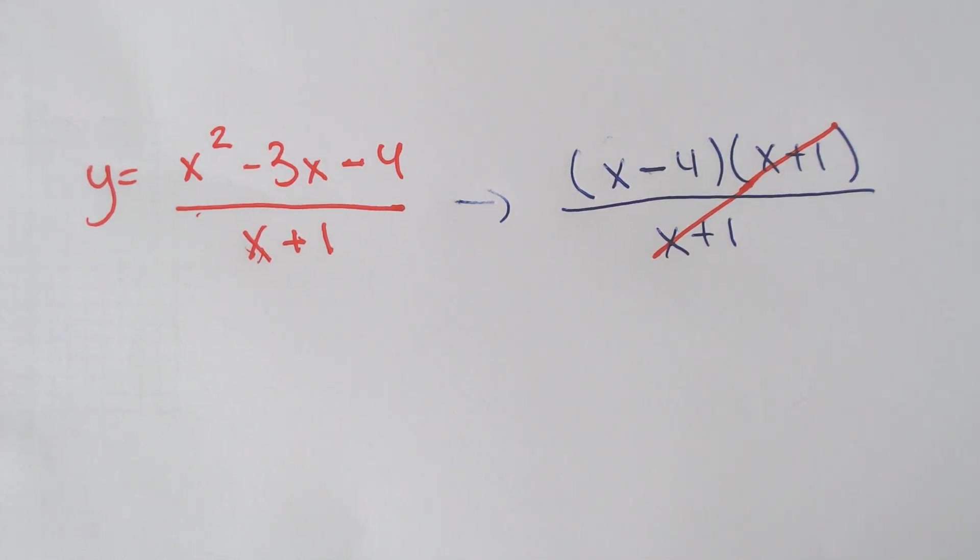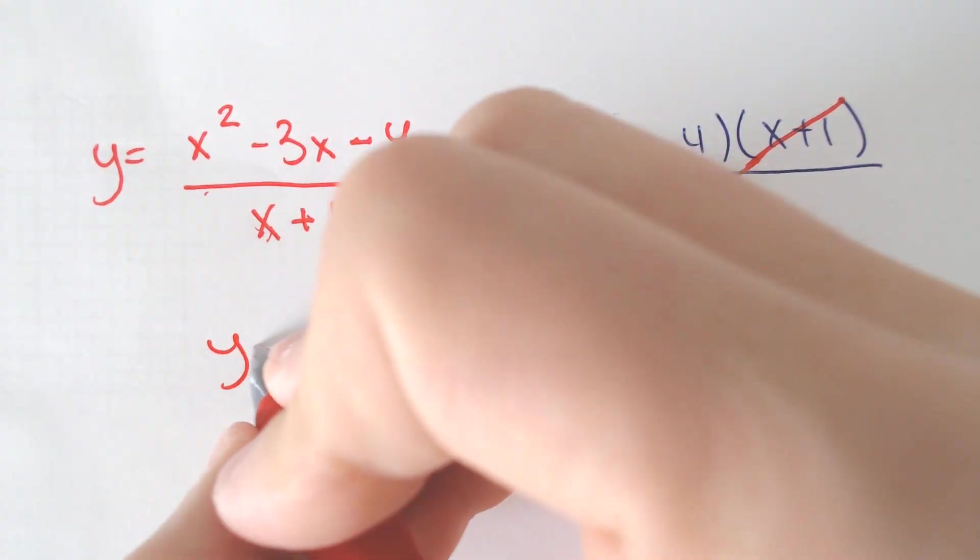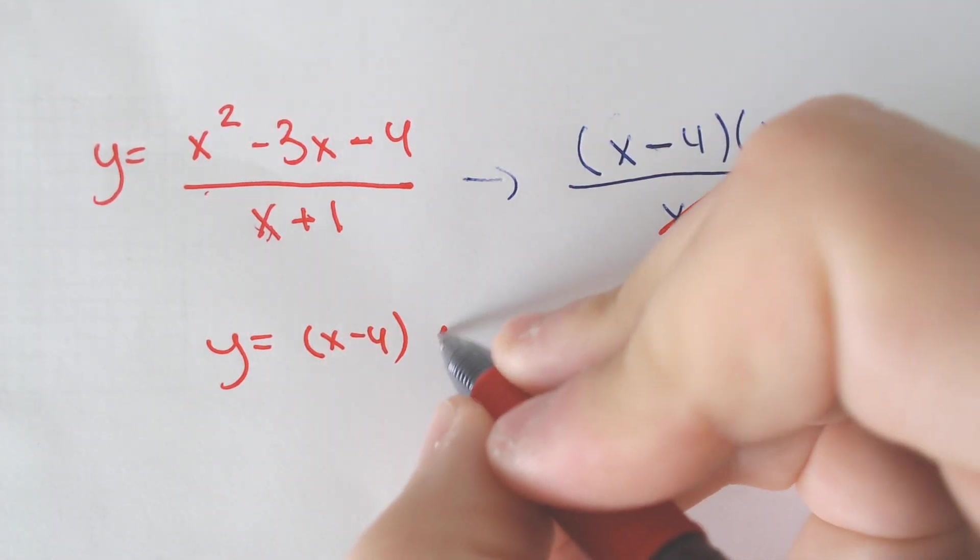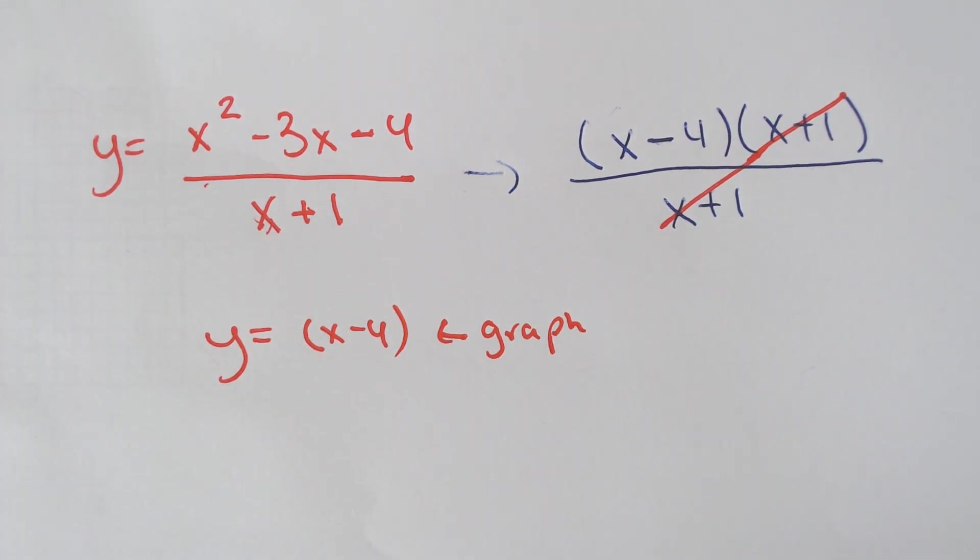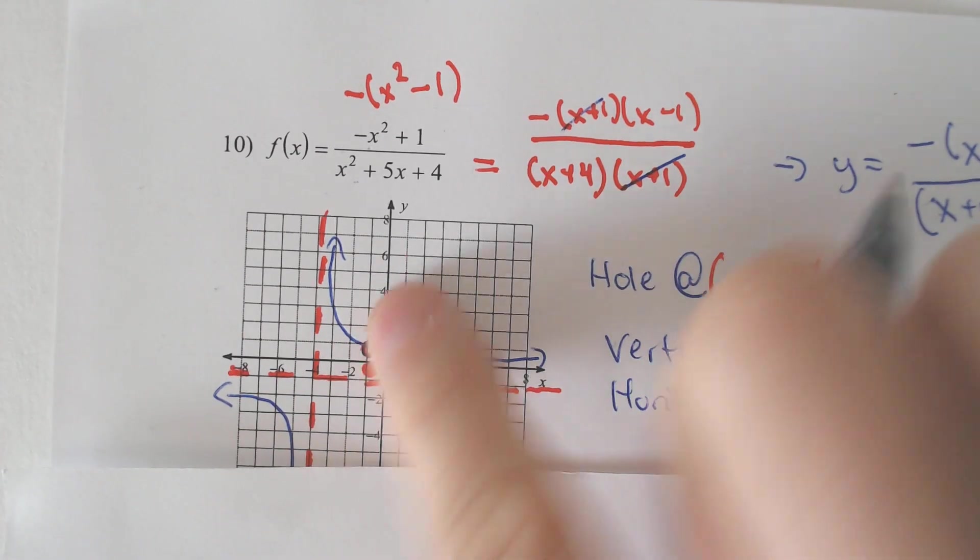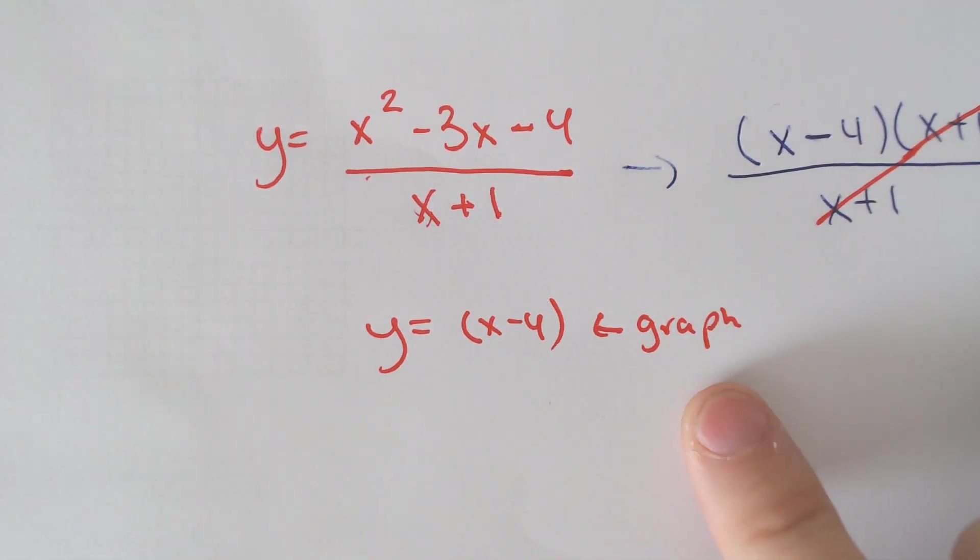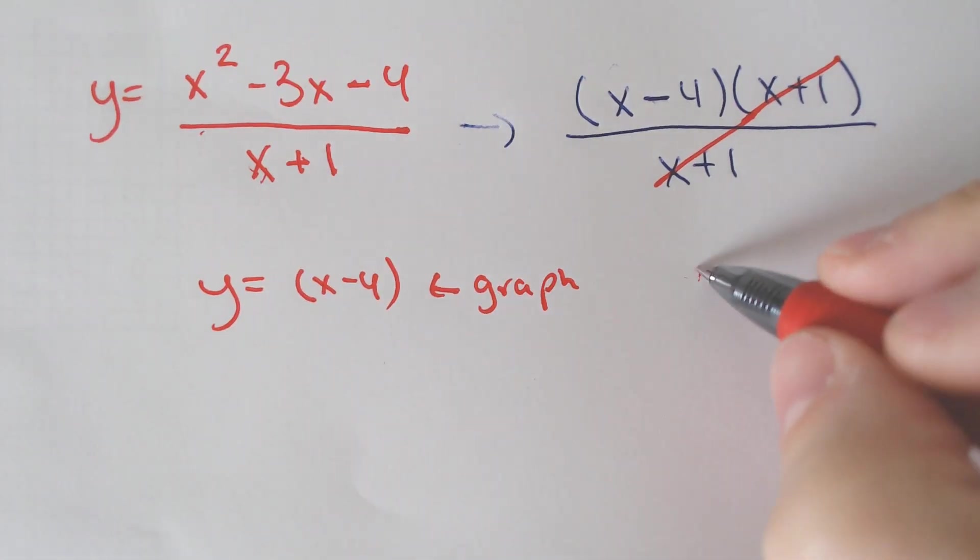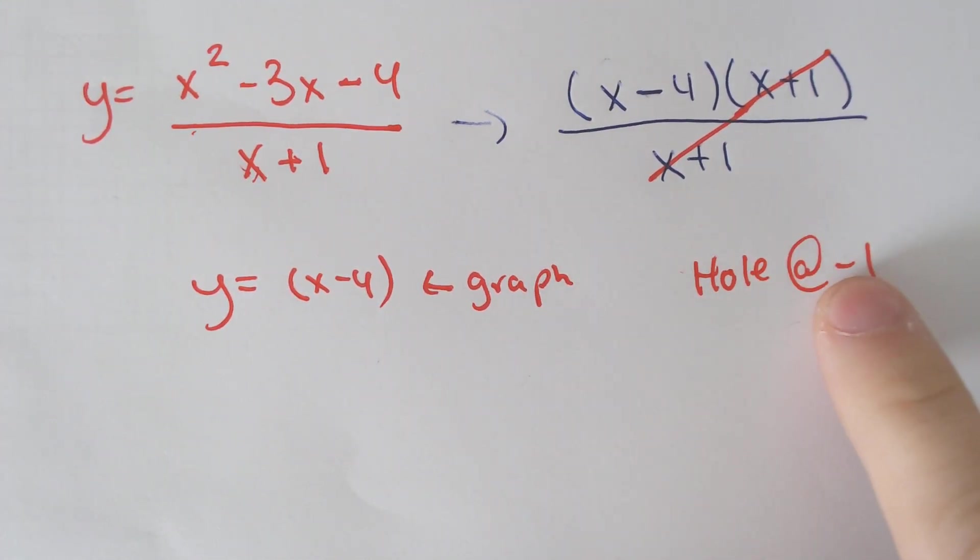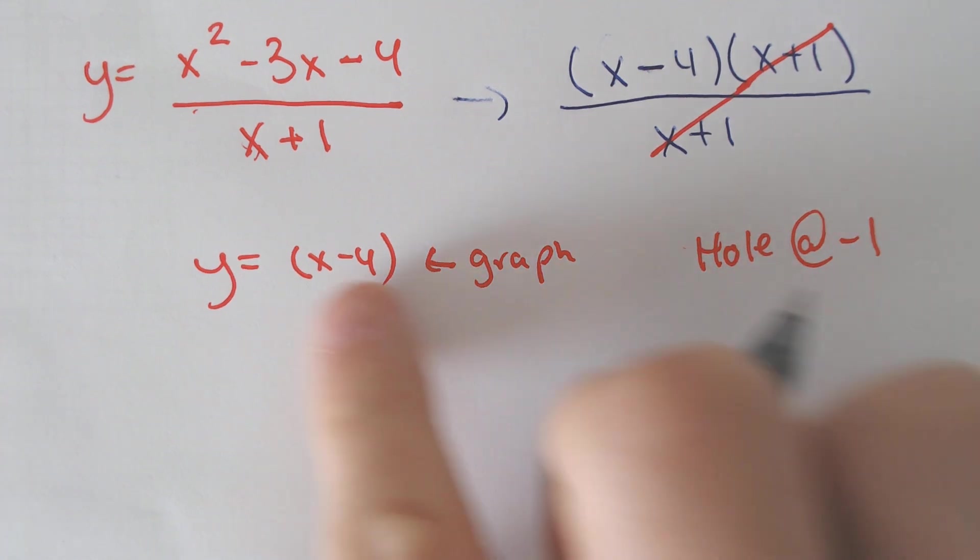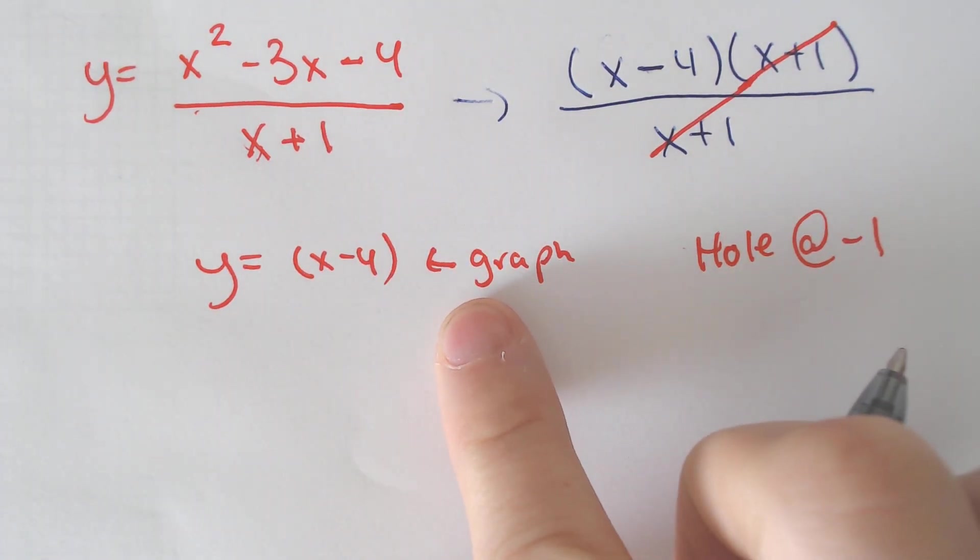Well this is very peculiar because now we have left over an x minus 4. That is what we're supposed to graph, and that ladies and gentlemen is not a crazy looking graph. That is just a line. So yes, we still have a hole at negative 1, because if we set the x plus 1 equal to 0 you get the hole at negative 1, but what we're graphing doesn't involve vertical asymptotes. It doesn't involve horizontal asymptotes. It's a line.